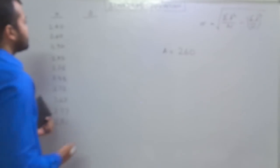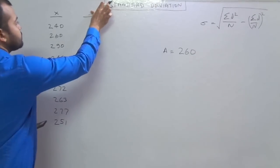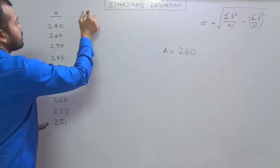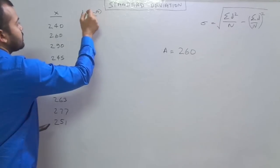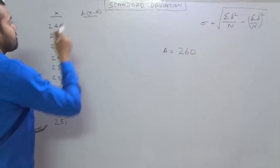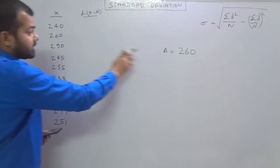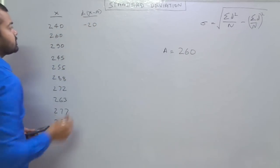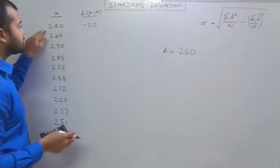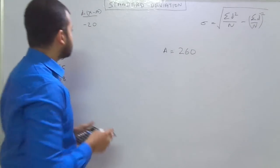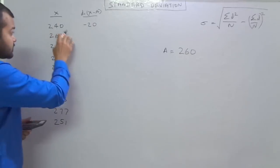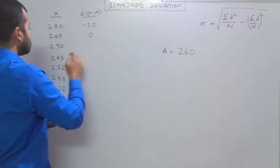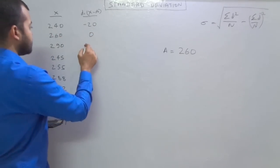Now we have to calculate the deviations. Here X minus A. Here D means X minus A. So 240 minus A is 20, that is of negative value because 240 minus 260 is minus 20. Now 260 minus 260 that is 0. 290 minus 260 is 30.